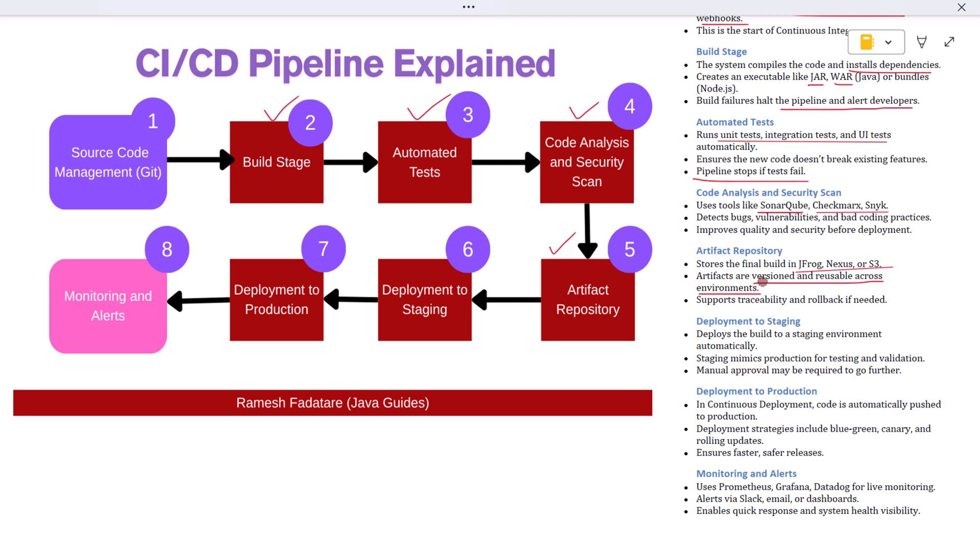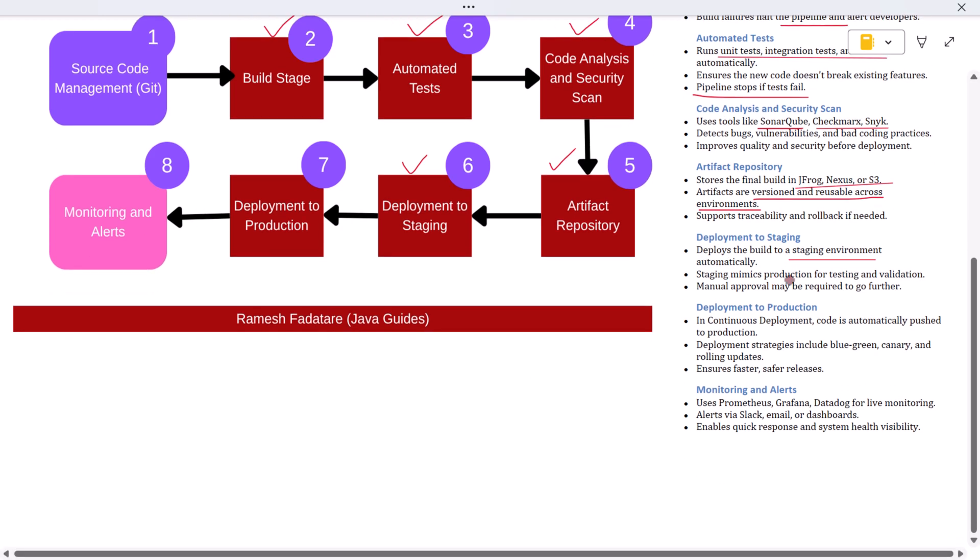Next comes continuous delivery, where the approved build is automatically deployed to a staging or test environment. This staging environment is almost identical to production: same configurations, same dependencies.